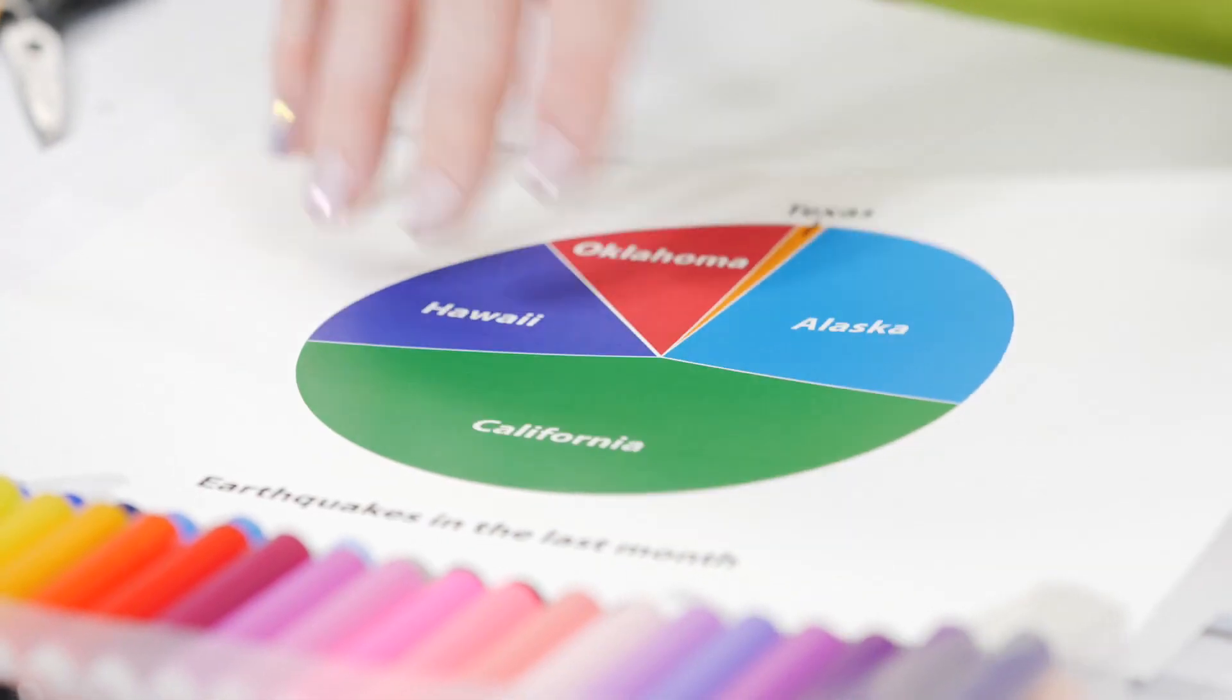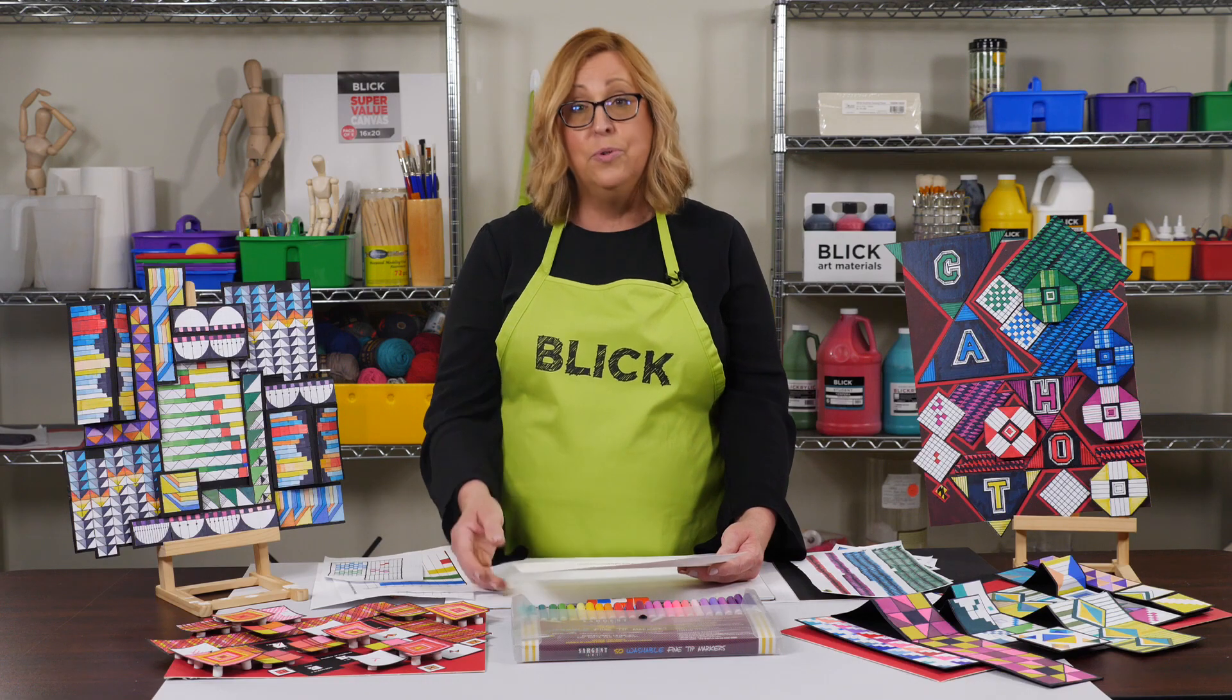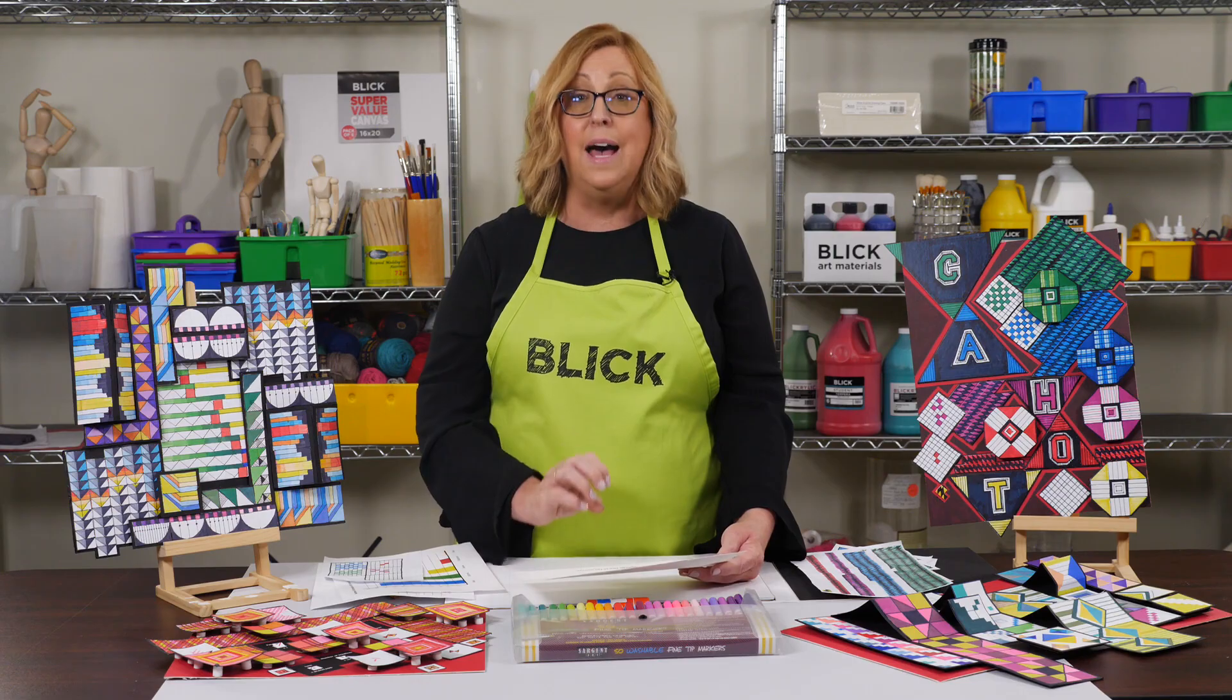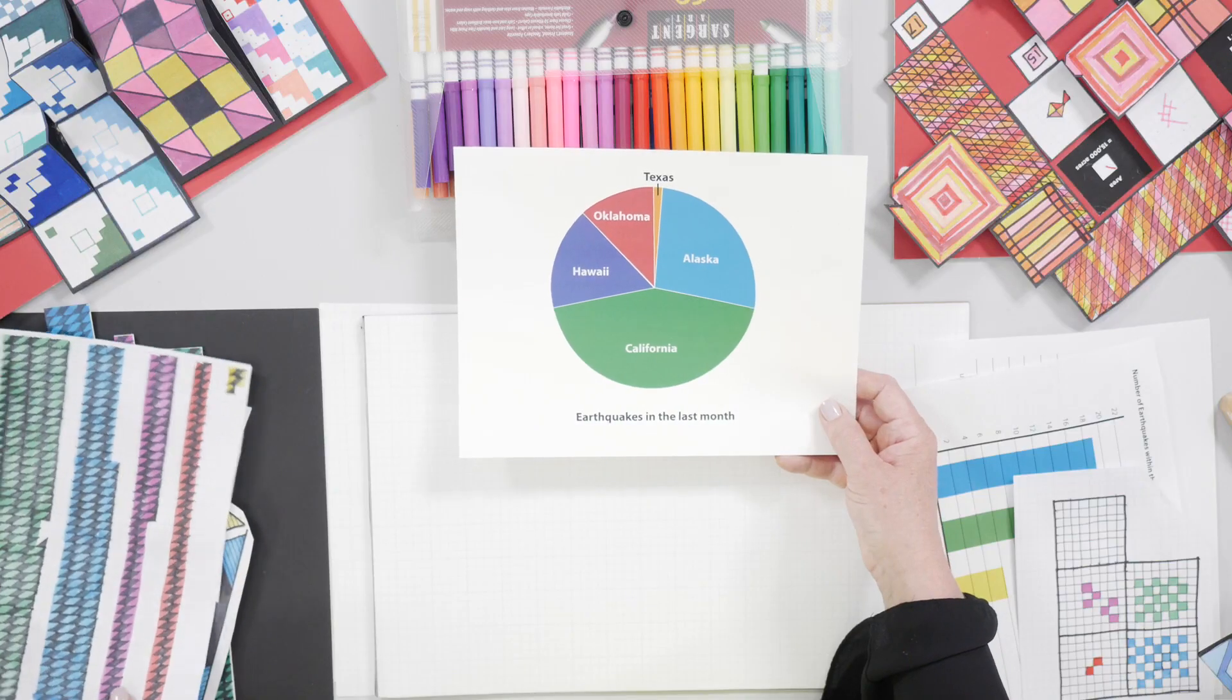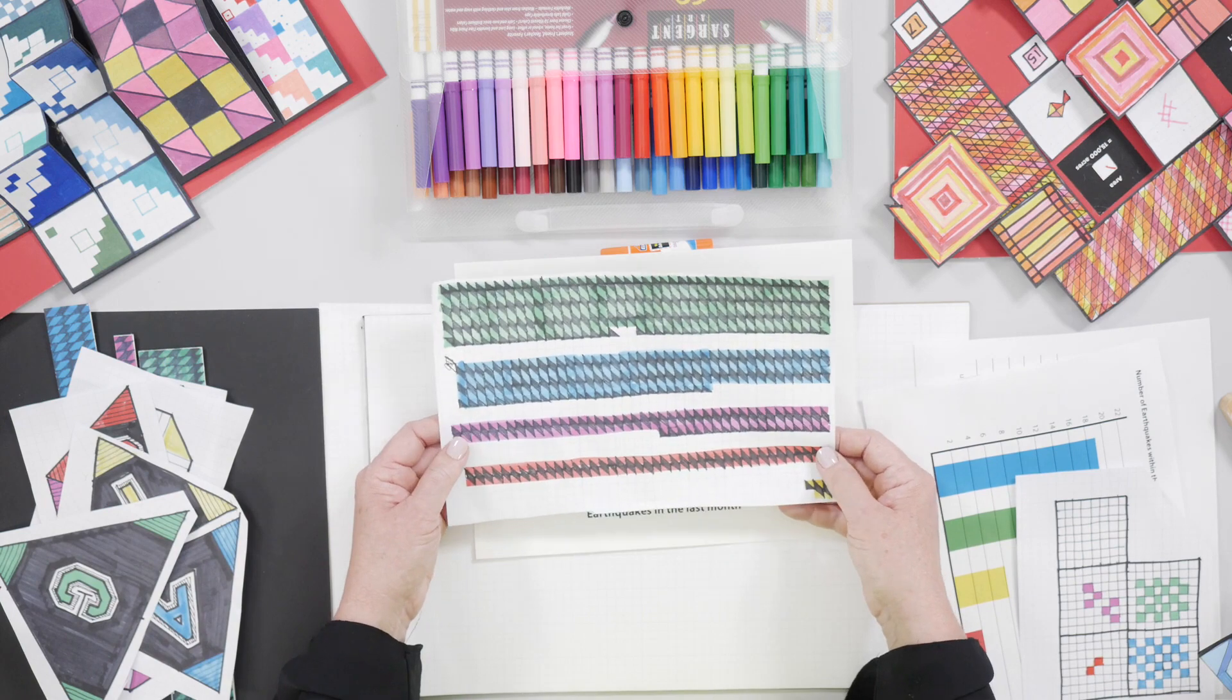Sometimes data is expressed as parts of a whole as we're used to seeing in a pie chart. This pie chart tells us out of how many states which one had the most earthquakes in a month. Now we don't know exactly how many earthquakes, just who had the most. So on graph paper, I've created a zigzag pattern. This tells us exactly the same thing.